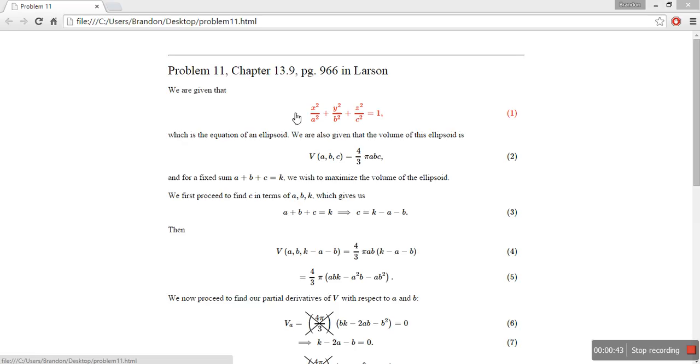And they also give us the equation of the volume of this ellipsoid, which in terms of a, b, and c is equal to 4 thirds pi abc.